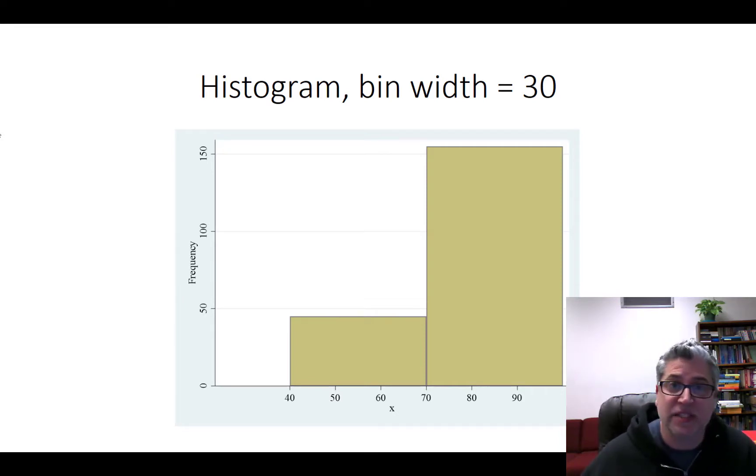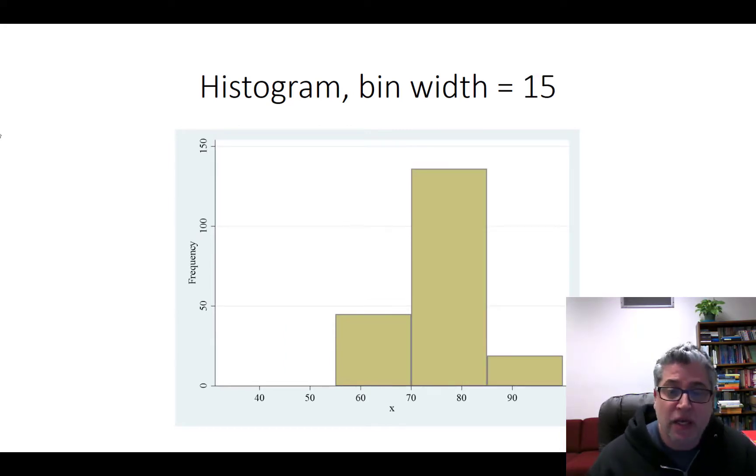In this case a width of 30. So what if we do 15 instead? Well, now this is starting to look a little bit more informative. So this kind of tells me that the average is probably somewhere around 75 or so. It looks fairly symmetric but not totally. It's still kind of hard to tell whether that's because my limits for where I start those bins have been positioned, but I'm starting to get a sense of shape from this histogram.